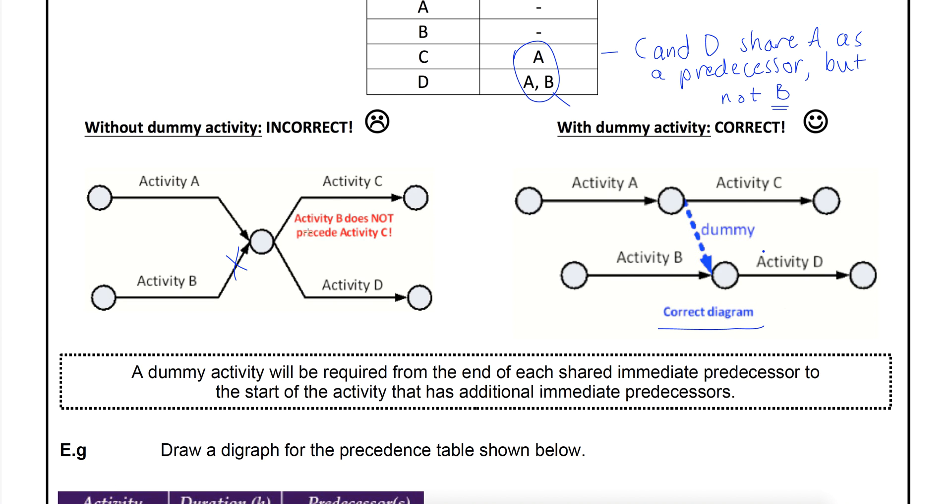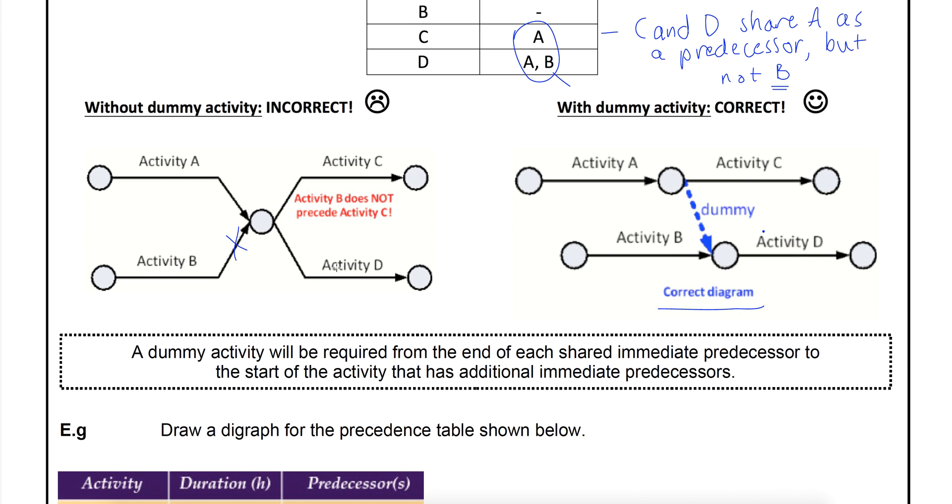If we invent this little activity it means that we can connect A to D whilst separating B from C. So this is the correct diagram for that situation. The one on the left was incorrect.